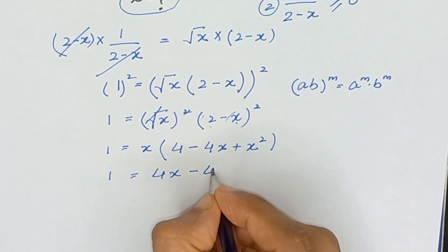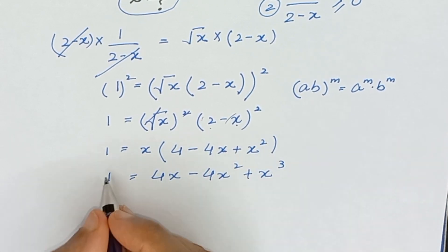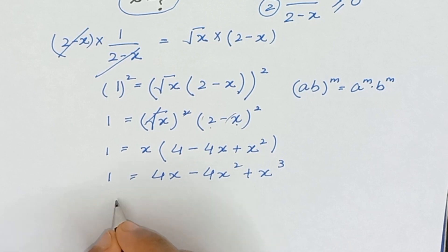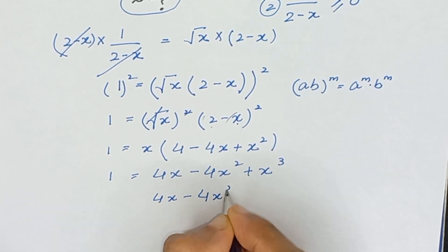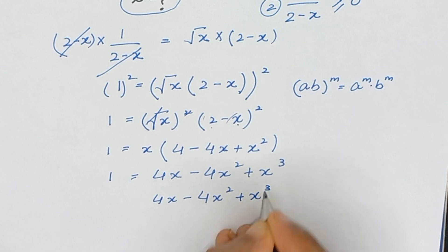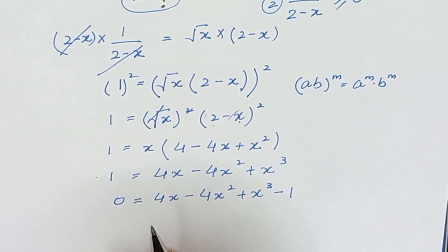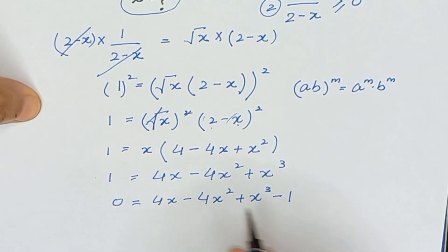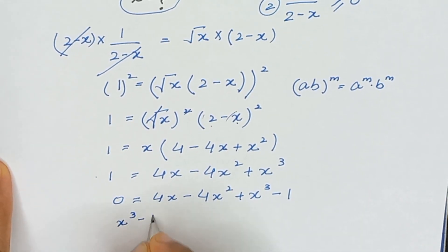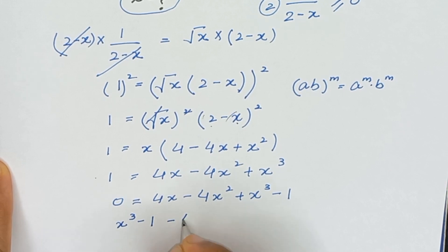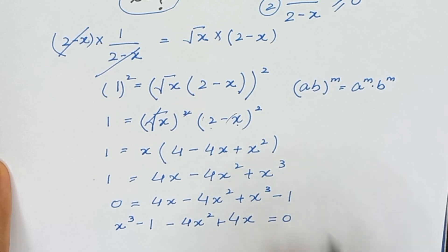After multiplying x inside the bracket we get 1 equals 4x minus 4x squared plus x squared. Taking the negative 1 to the right side and rearranging gives: x cubed minus 1 minus 4x squared plus 4x equals 0.